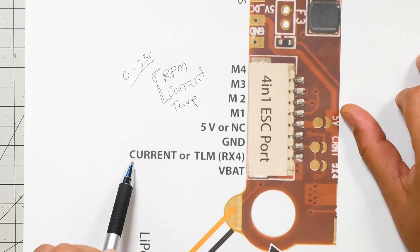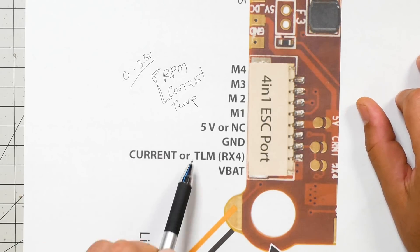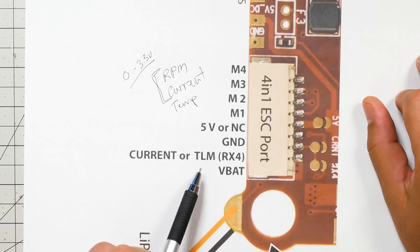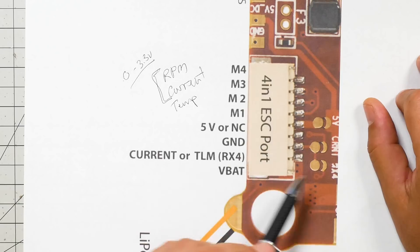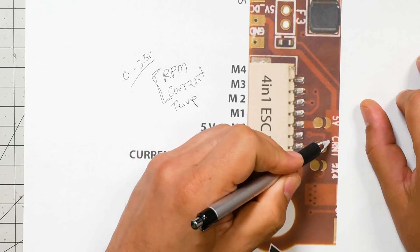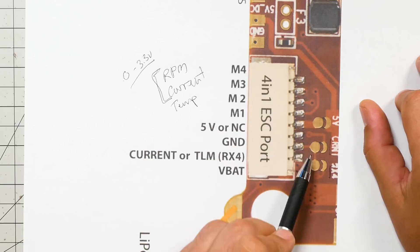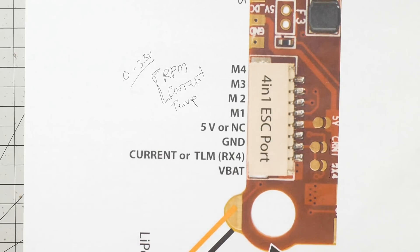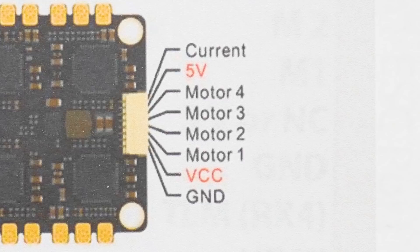And you have your pick of which way you want to do that. Some ESCs will have only analog current sensing. Some ESCs will have only ESC telemetry. Some will have both. And here we have these two solder pads. One says current and one says RX4. And those are probably going to bridge one of those, but not the other. And that will pick what the function of this pad is going to be.